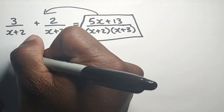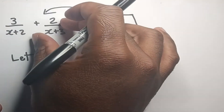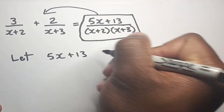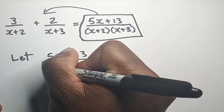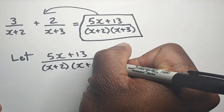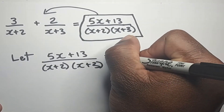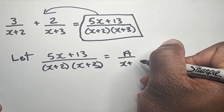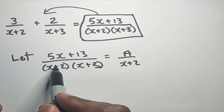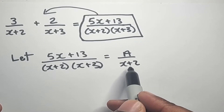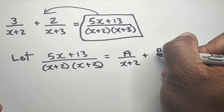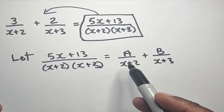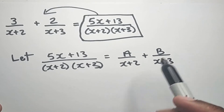So what we're going to do — let's say we didn't know this part of it. We're going to let 5x plus 13 over (x plus 2)(x plus 3) be equal to A over x plus 2, taking the first bracket as the denominator, plus B over the second bracket, which is x plus 3. So we're pretty much expanding this into two simpler fractions.